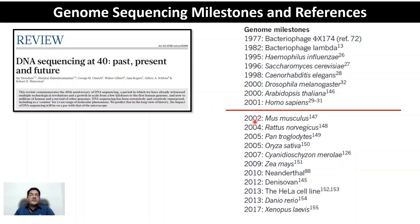Since the sequencing of the human genome, other genomes got sequenced very quickly because we had standardized the techniques required for sequencing a large and complex genome like the human genome.